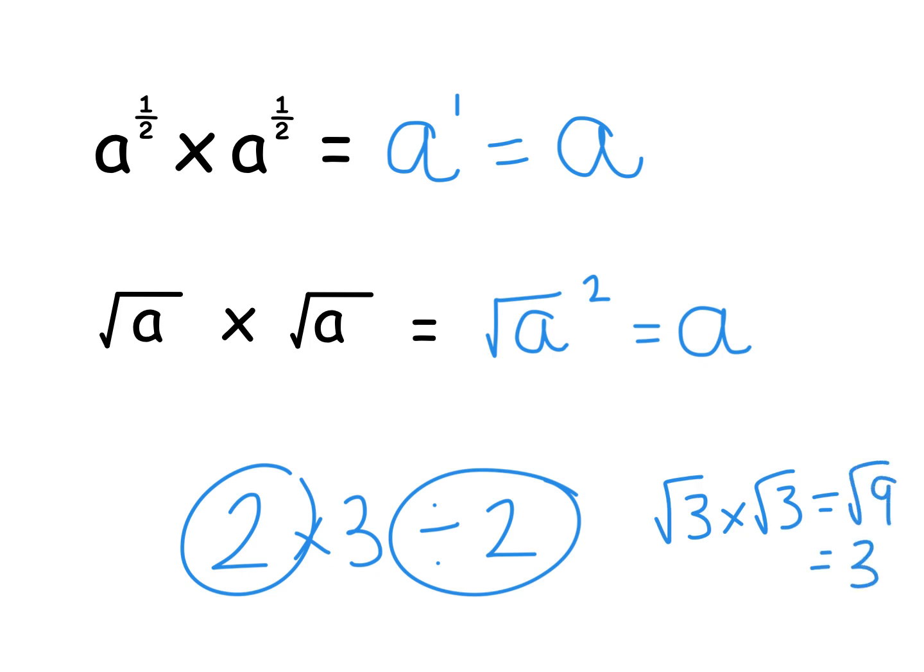And if you've already done the surds before this topic, you should be aware that maybe root three times root three is just root nine, which is still just three. So the square roots disappear. Now, if both of these questions give you the answer of a, and the only difference is that this one I've given you a square root in front and this one I've given you in a power of half, then it's safe to say that a to power of half can also be written as the square root of a.